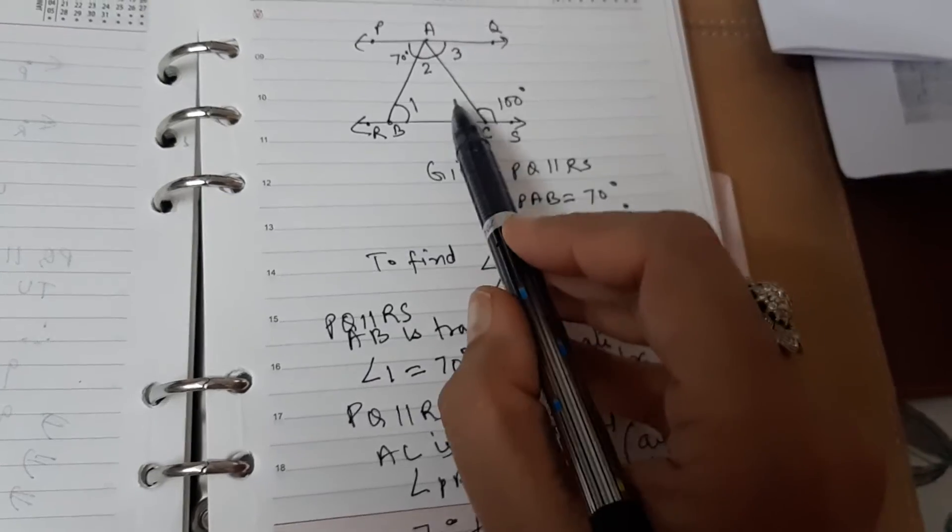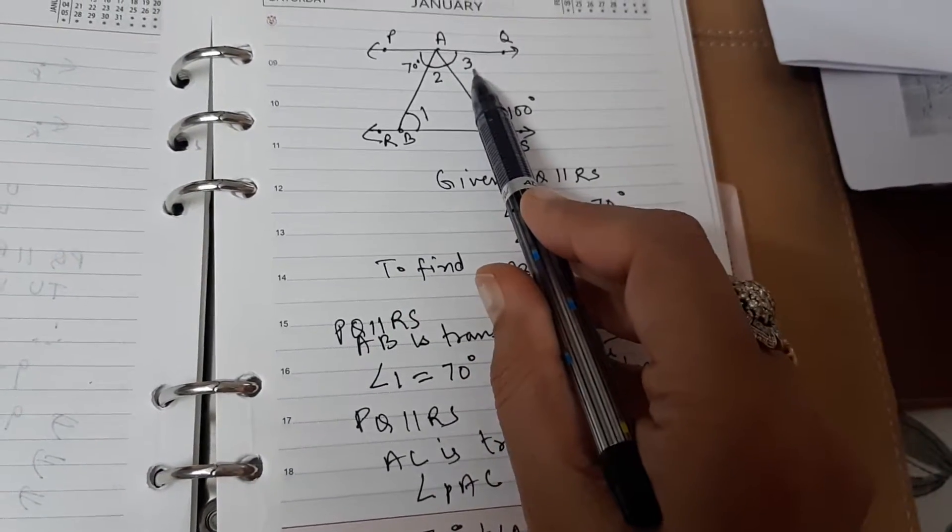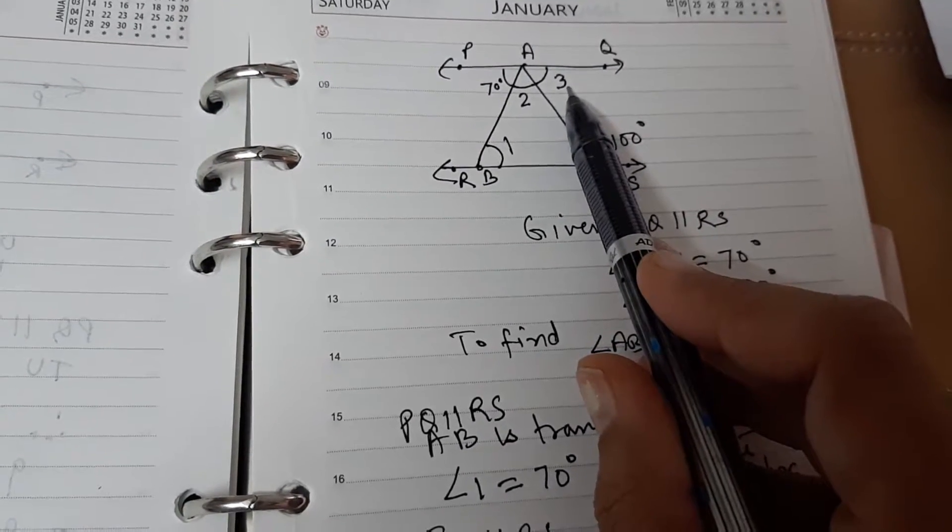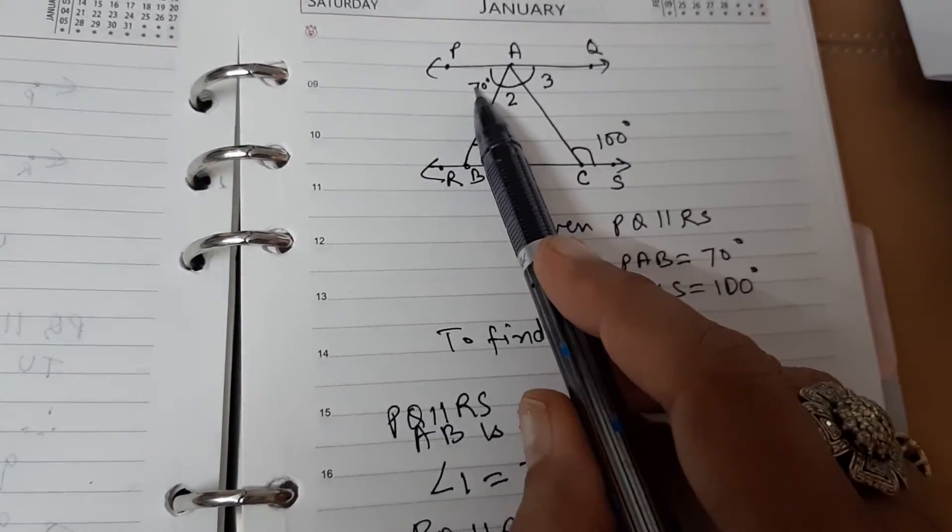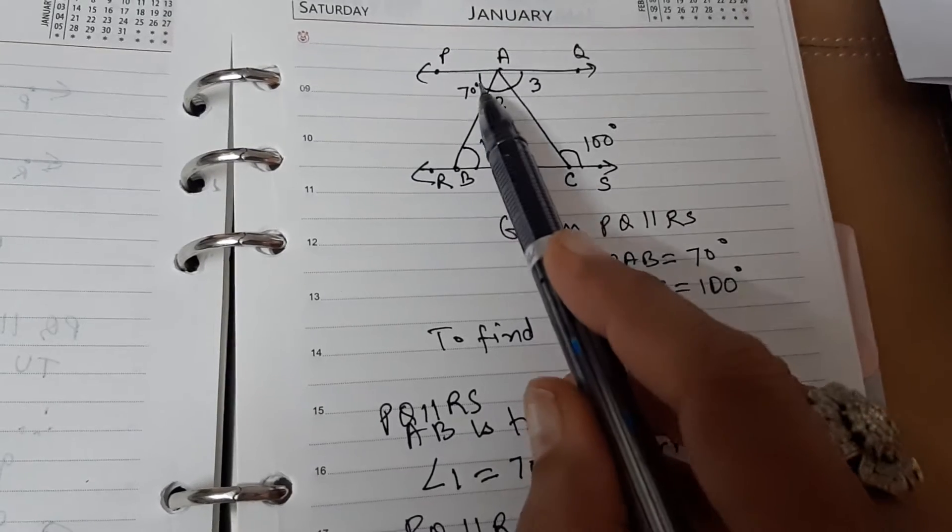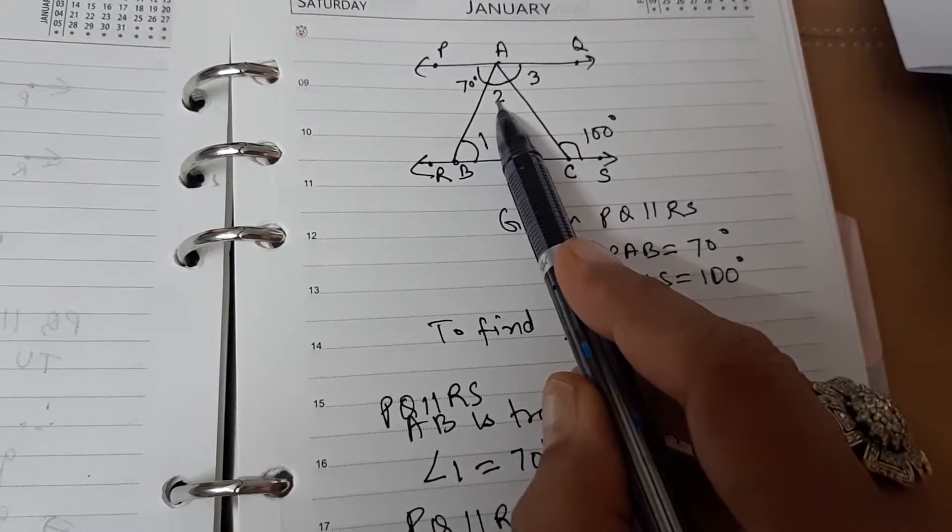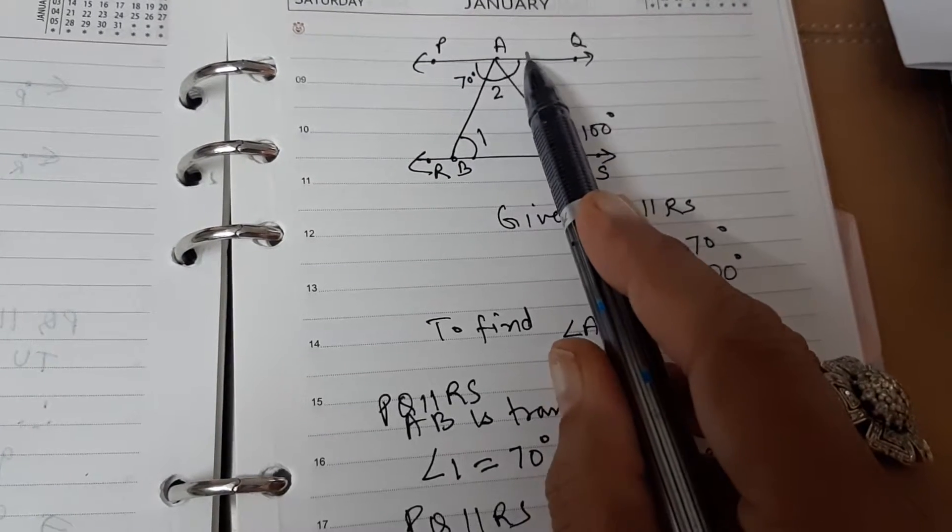So, we have to now find angle 3. Now, quickly tell me which result you are going to apply. Angle PAB is 70 degrees. Angle 2 is 30 degrees. Can you find what will be angle 3?